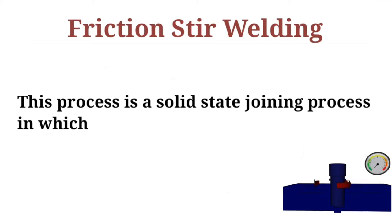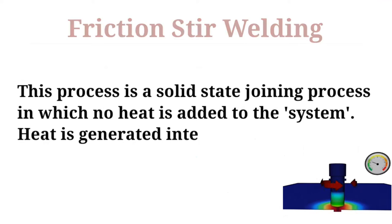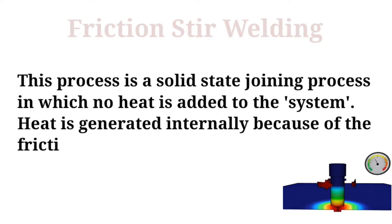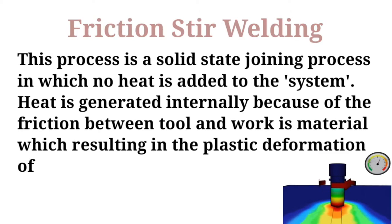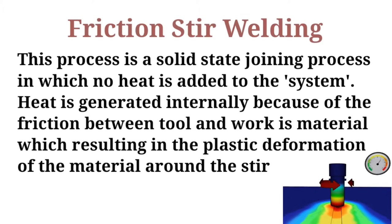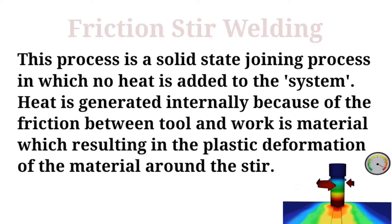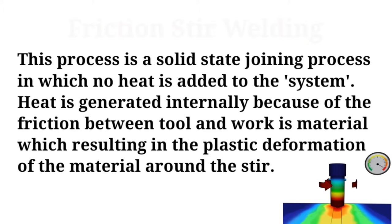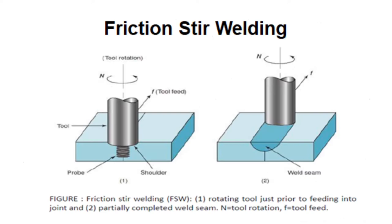The friction stir welding process is a solid state joining process in which no heat is added to the system. Heat is generated initially because of the friction between the tool and work material, resulting in the plastic deformation of the material around the stir area.